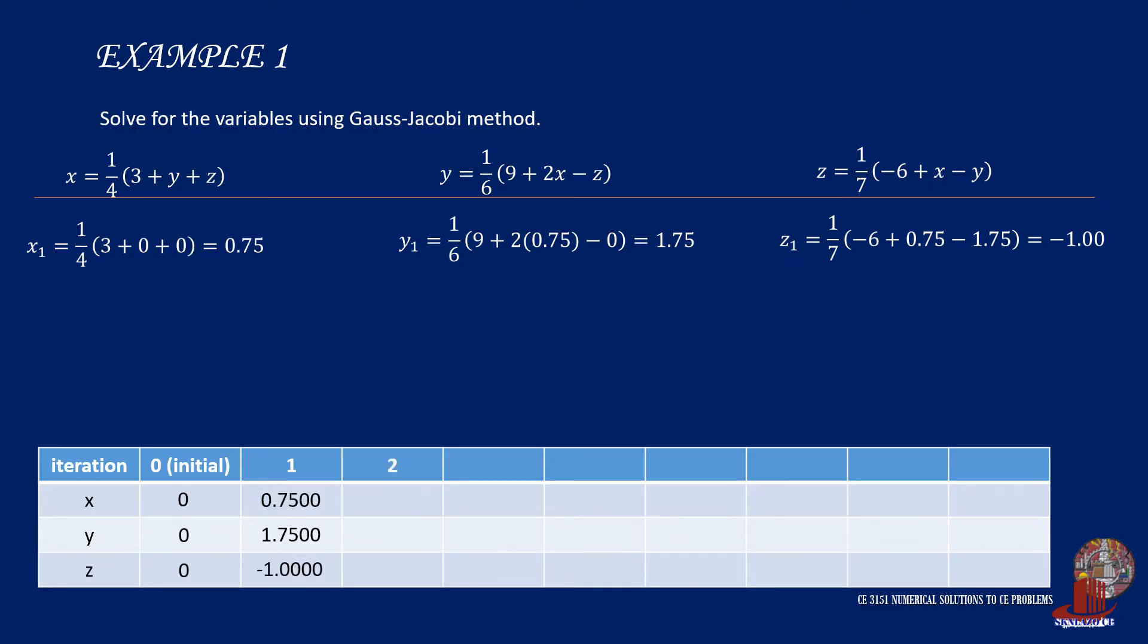The second iteration will also be using the concept of using the latest values of the variables iterated. So x sub 2 is a quarter of 3 plus 1.75 minus 1, and that is 0.9375. y sub 2 is one over 6 times the quantity of 9 plus 2 times the new x, which is 0.9375, minus negative 1.